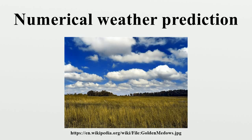For example, the grid boxes in weather and climate models have sides that are between 5 km and 300 km in length. A typical cumulus cloud has a scale of less than 1 km, and would require a grid even finer than this to be represented physically by the equations of fluid motion. Therefore, the processes that such clouds represent are parameterized by processes of various sophistication.